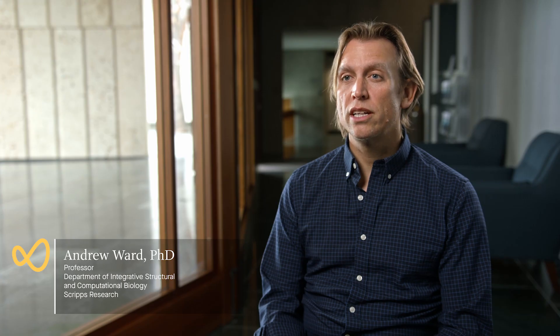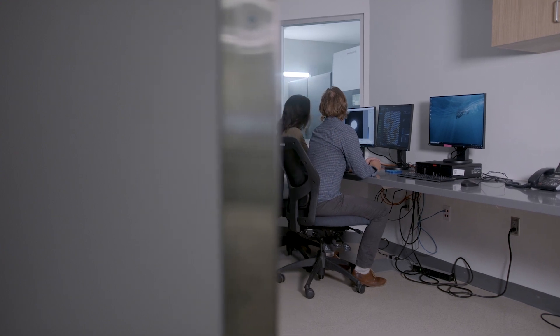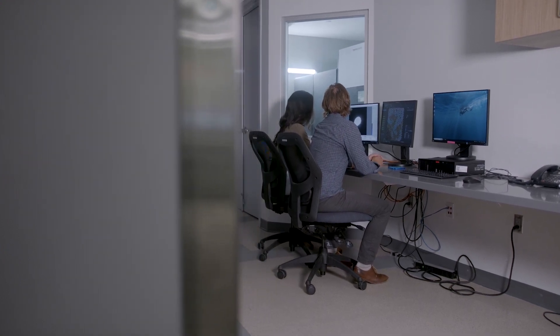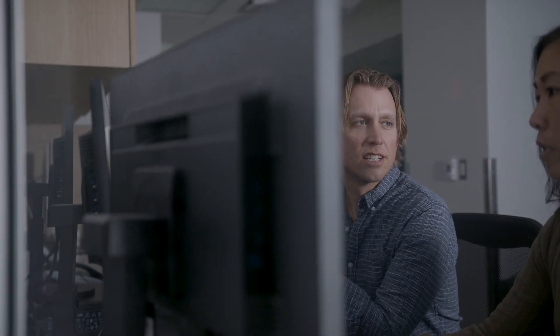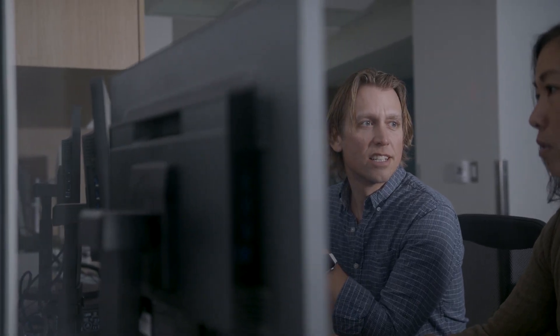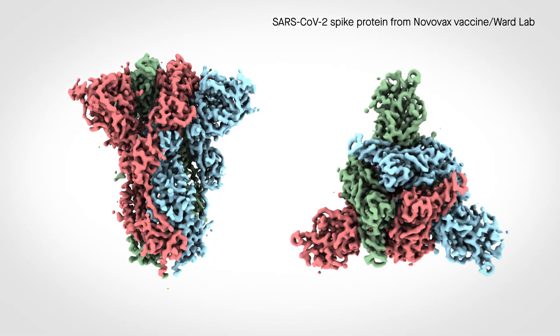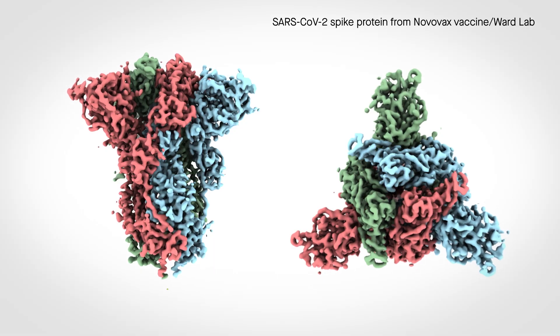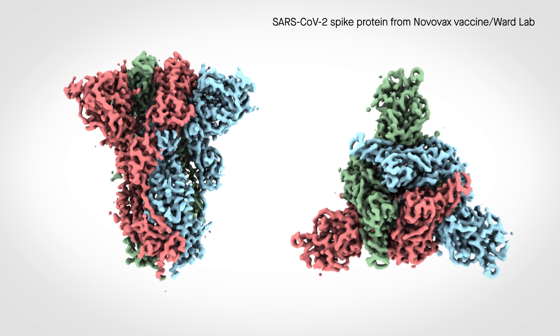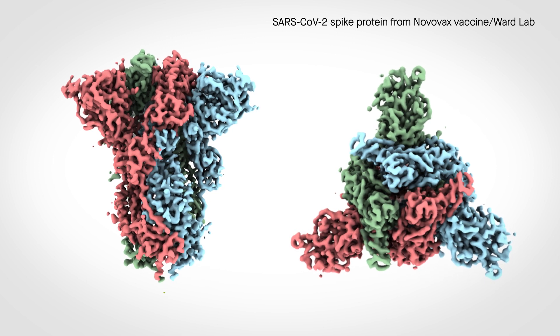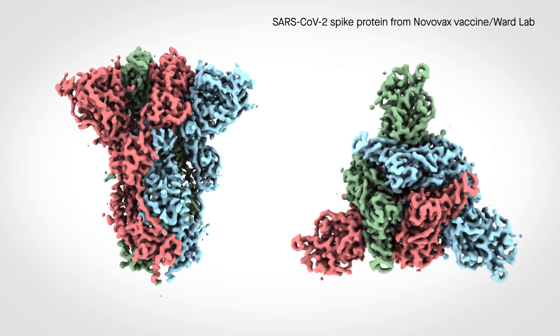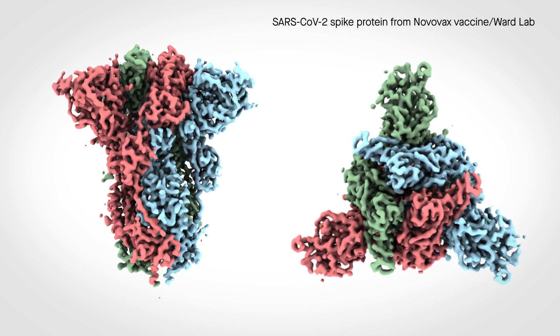Imaging, particularly electron microscopy imaging, which is what our lab does, can provide molecular details for a very large set of viruses and antibodies, looking at the interface between viruses and antibodies with atomic precision. That atomic precision allows you to design vaccines for the future.